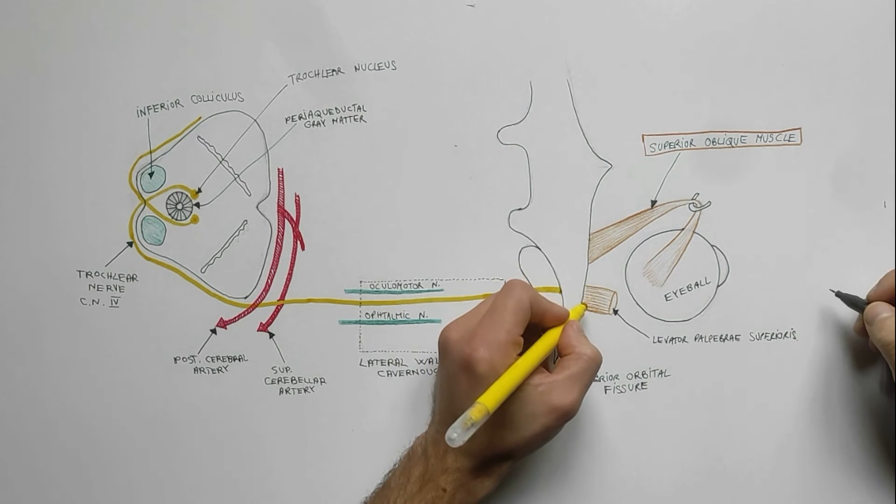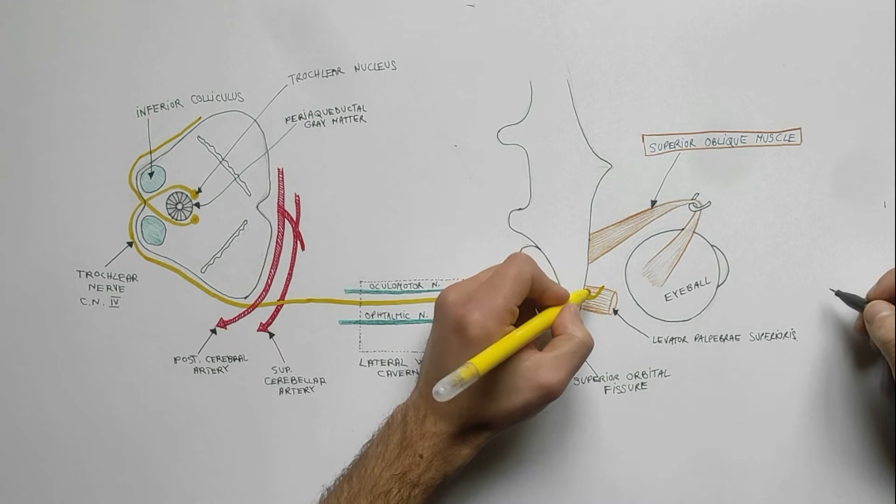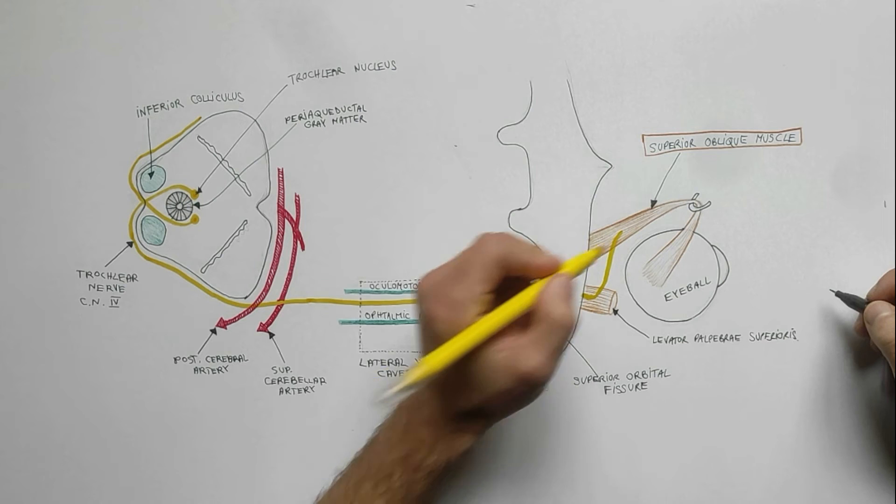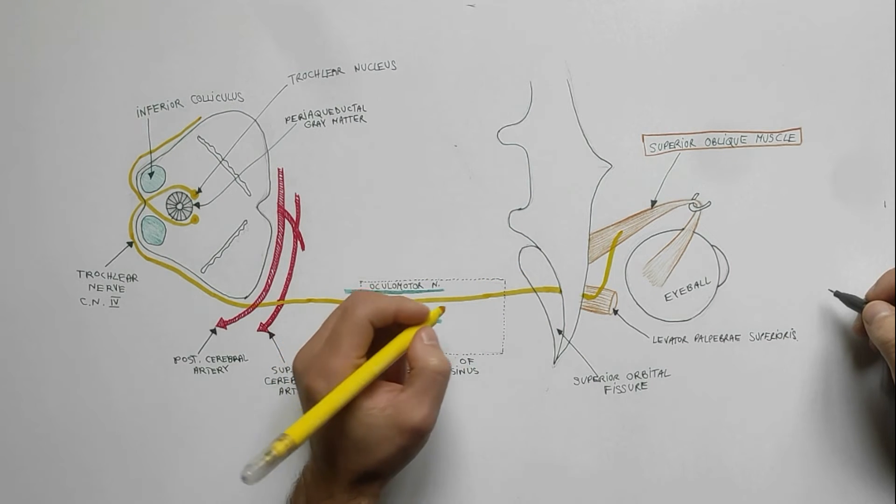The nerve then courses medially close to the roof of the orbit and runs diagonally above the levator palpebri superioris muscle to reach its target, the superior oblique muscle.